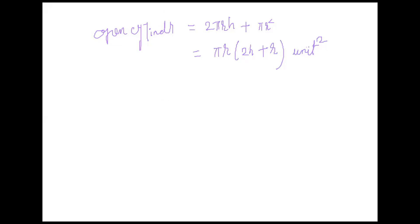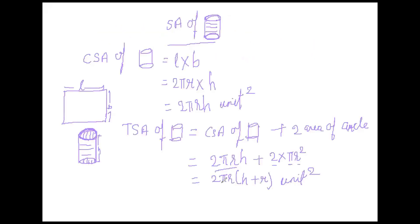Now in the question, sometimes we are asked the curved surface of cylinder. As we derived earlier, that formula will be used. For the total cylinder it is 2πr(h + r) square units. Thank you.